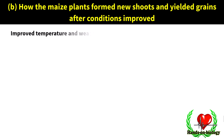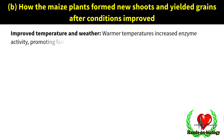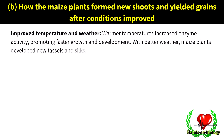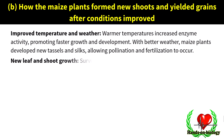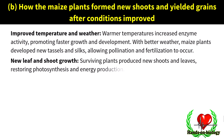How the maize plants formed new shoots and yielded grains after conditions improved: warmer temperatures increased enzyme activity, promoting faster growth and development. With better weather, maize plants developed new tassels and silks, allowing pollination and fertilization to occur. Surviving plants produced new shoots and leaves, restoring photosynthesis and energy production.